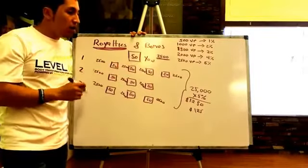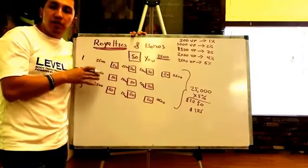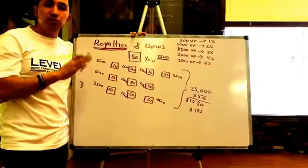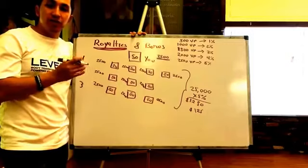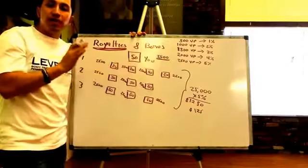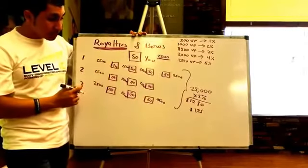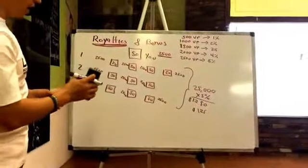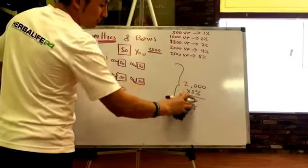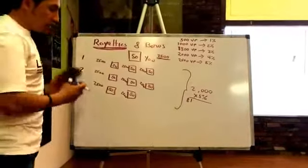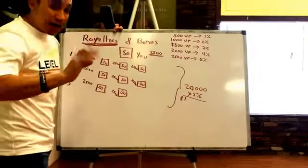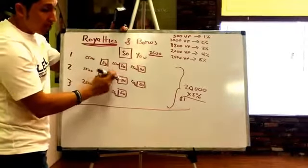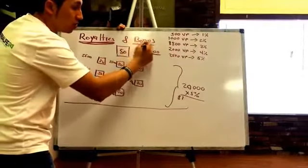Of course in this business we don't just do 2,500 volume points. Depending on how you're working and what tools you're using, you might do 5,000 or 10,000 volume points. It also depends on whether you're full-time or part-time, but 2,500 is the main goal minimum. Now let's talk about where the bonus comes in. Let's say your group of 8 supervisors is doing 20,000 total volume points.